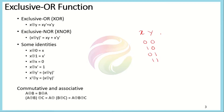The exclusive OR function produces a one when both of the inputs are different. This was the exclusive OR truth table. We generally represent it using a special symbol — a plus sign enclosed in a circle.